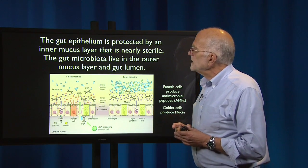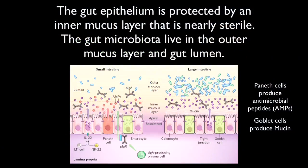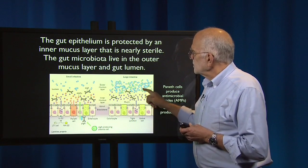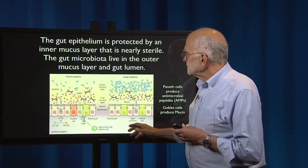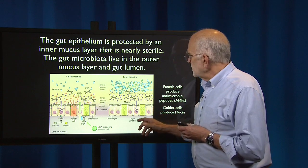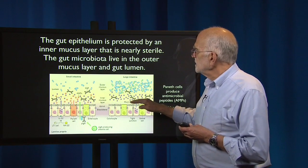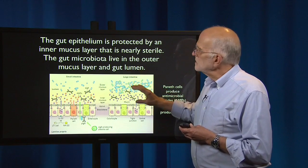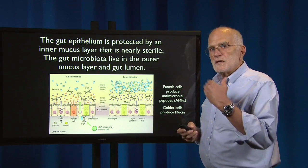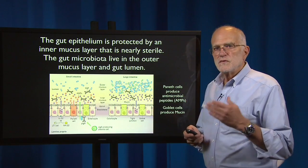The gut epithelium is protected by an inner mucus layer that is nearly sterile — astonishing given the huge density of bacteria in the gut. The gut microbiota live in the outer mucus layer and in the gut lumen. The Paneth cells are producing antimicrobial peptides, and the goblet cells are producing the mucus. That combination of mucus and antibacterial peptides is protecting the gut epithelium, but it's also creating a gut lumen in which the bacteria can flourish, and signals from the bacteria can also get through into the gut epithelium.